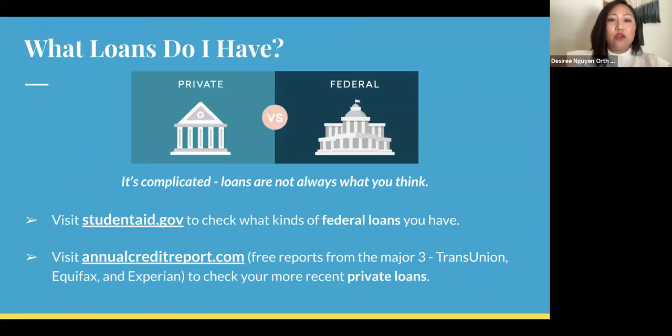The first step is to figure out what type of loan you have. Are they private or are they federal? This is complicated. It can also be confusing. Loans aren't always what you think. Some older loans, some older FFEL loans, are government-based loans that were made through private companies. Other federal loans are consolidated into private loans and etc. To find what kind of federal loans you have, visit studentaid.gov. To find the most recent private loans that you have, visit annualcreditreport.com.